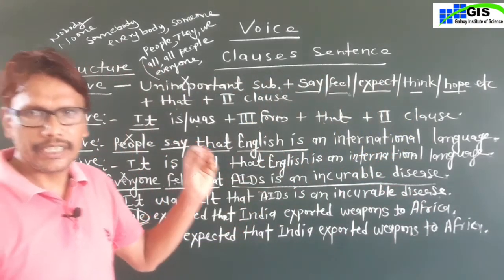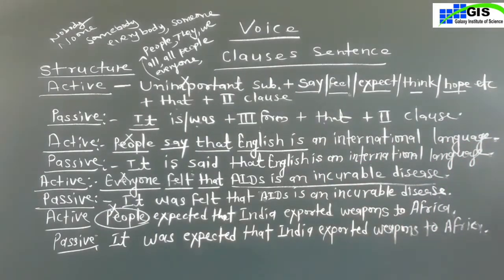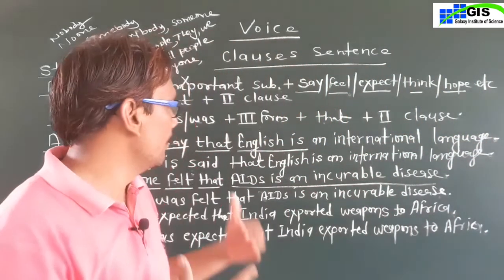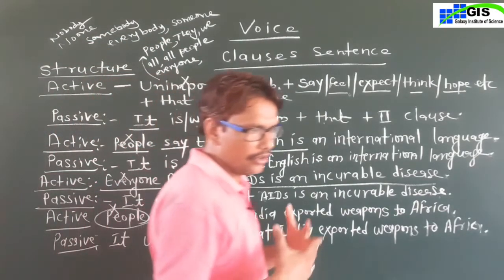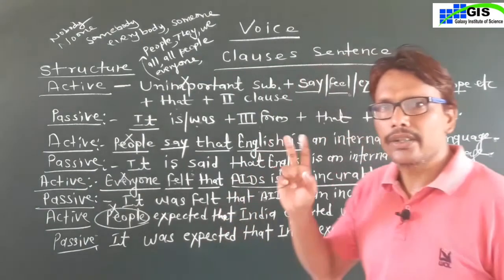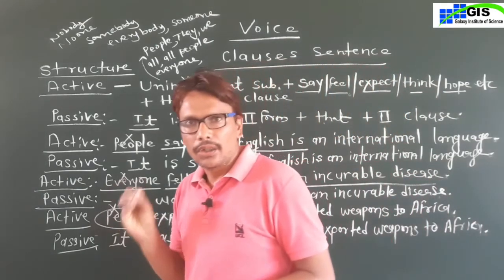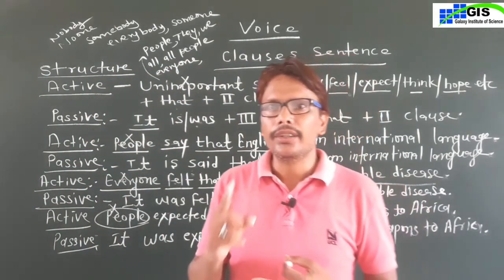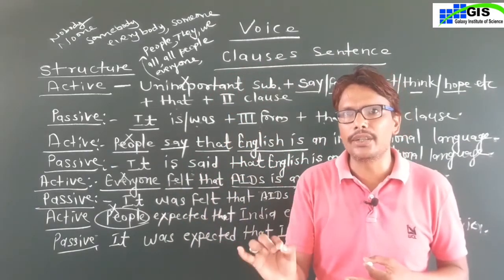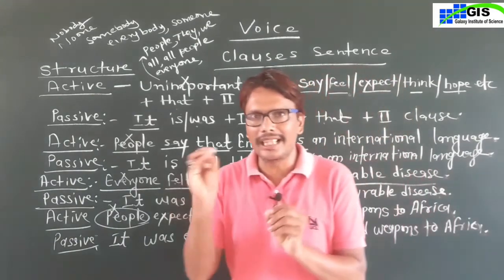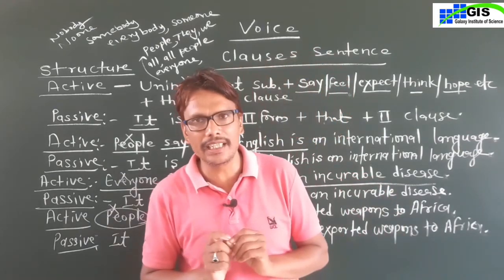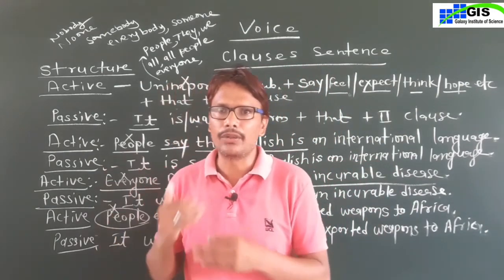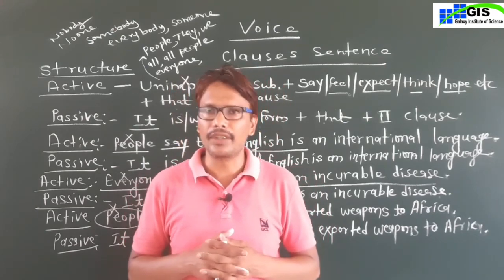These are the sentences. Dear students, you have to copy all the sentences from the blackboard by pausing the video, or you can take a screenshot on your mobile. I hope you got all these sentences — this type of clause sentence. In a clause sentence, you find two clauses, and you have to transform only one clause into passive voice; both clauses are not transformed. I hope you can now transform this type of active voice sentence into passive voice. Thank you.